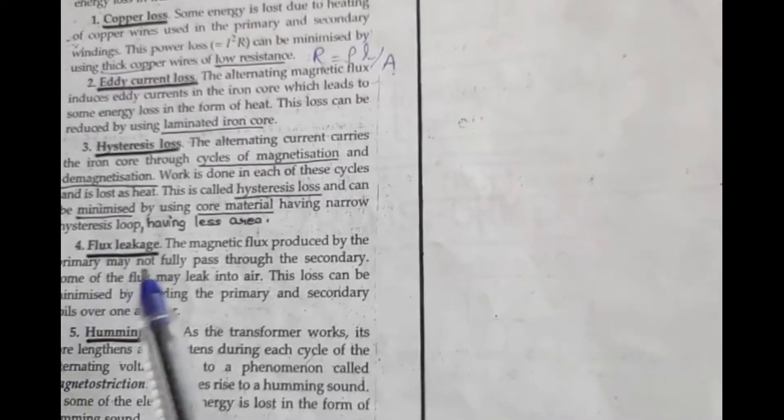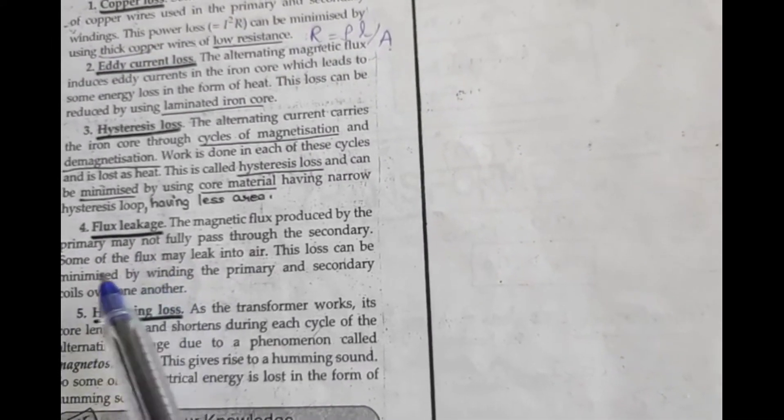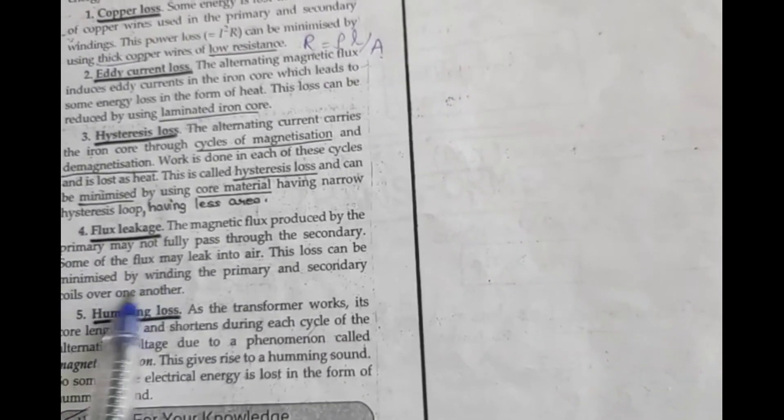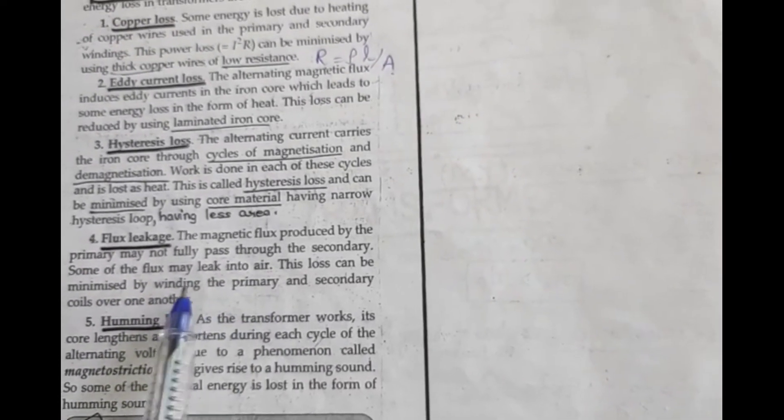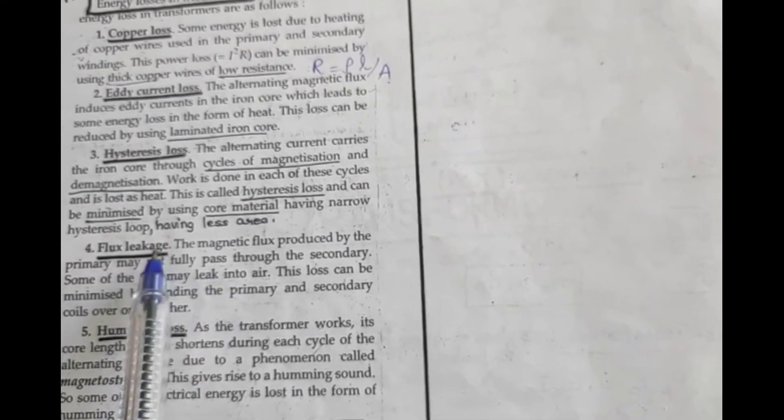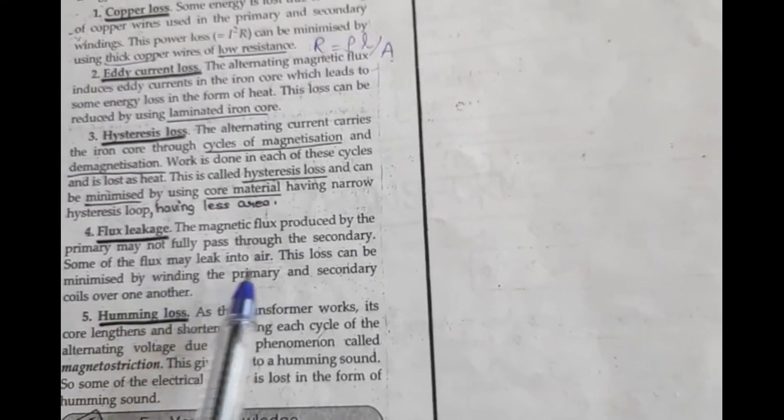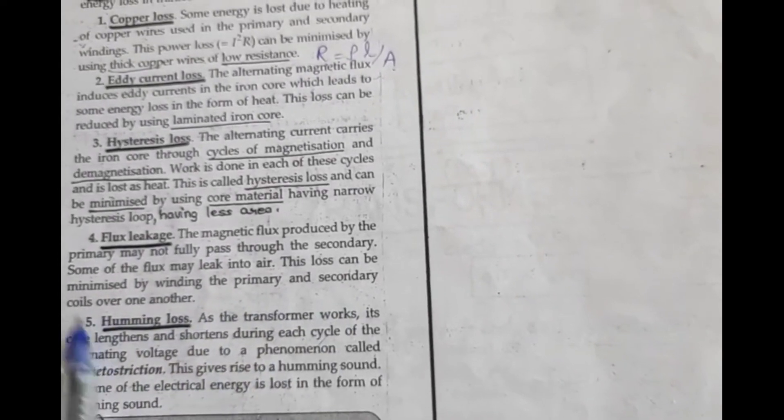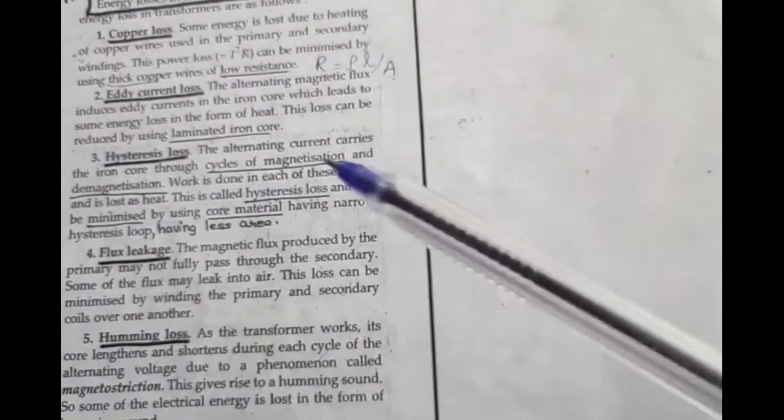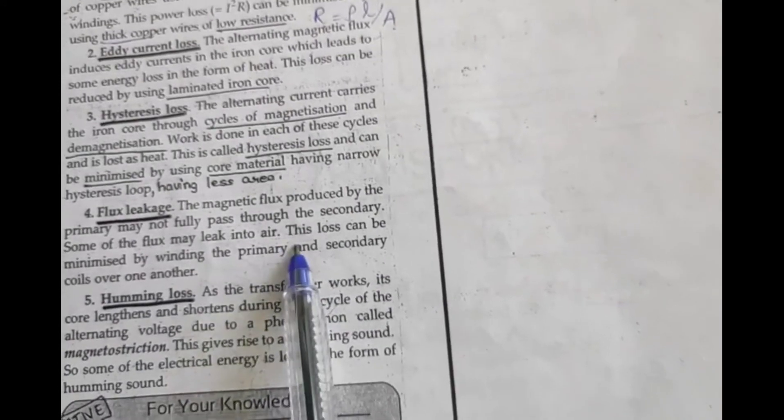Next is flux leakage. Till now, in ideal transformer we had taken that flux in primary and secondary was the same. But sometimes flux leaks, so that also causes energy losses. We can stop this leakage by winding primary and secondary coil over one another. Then the leakage will stop.